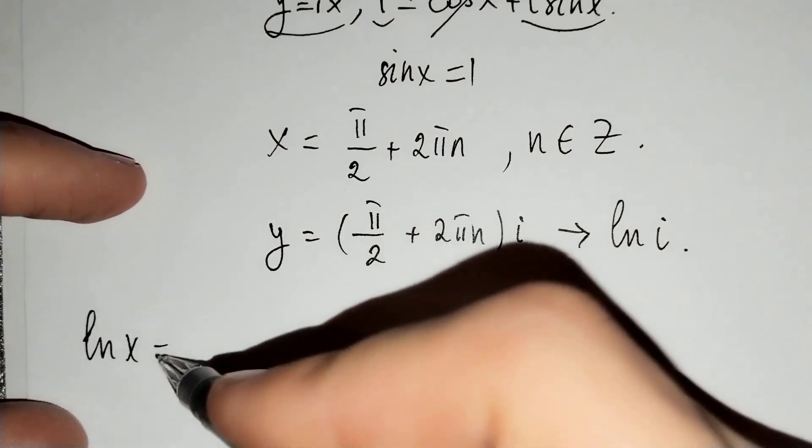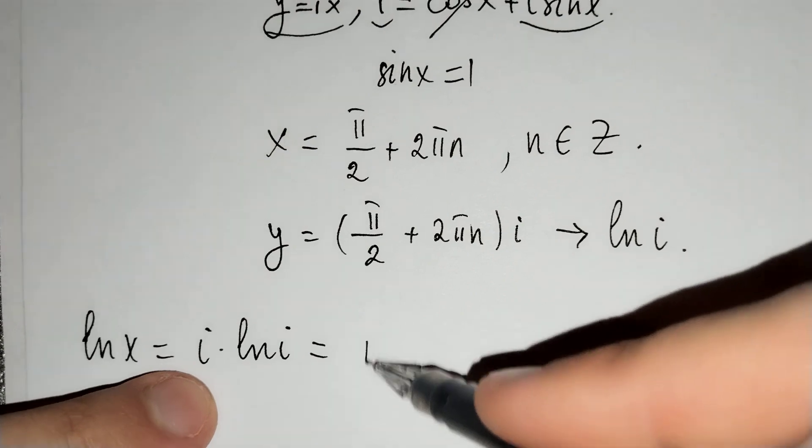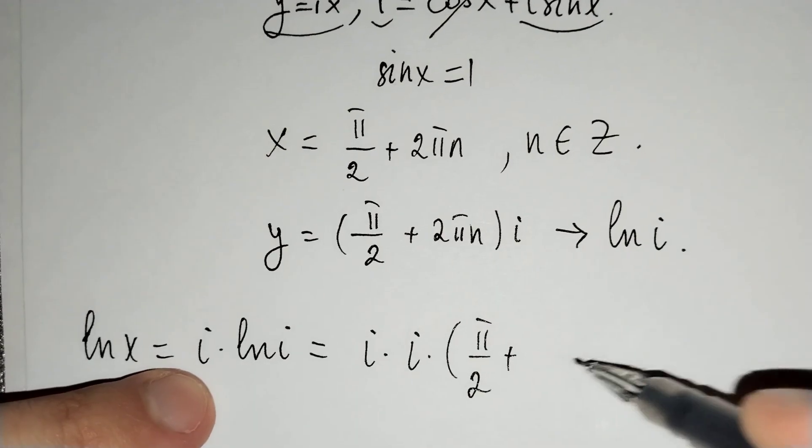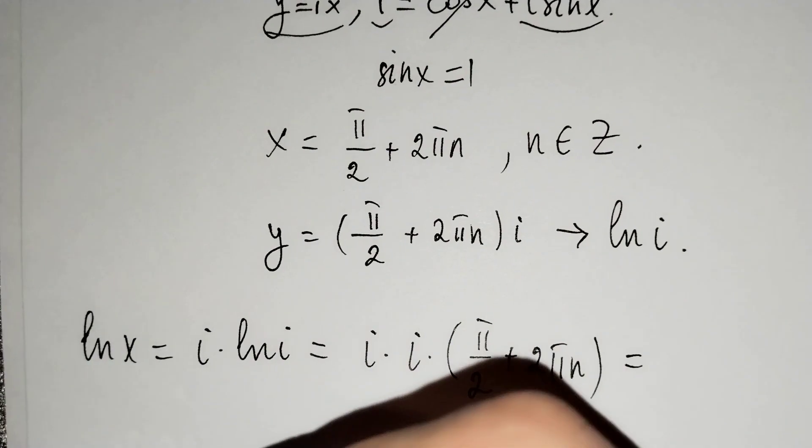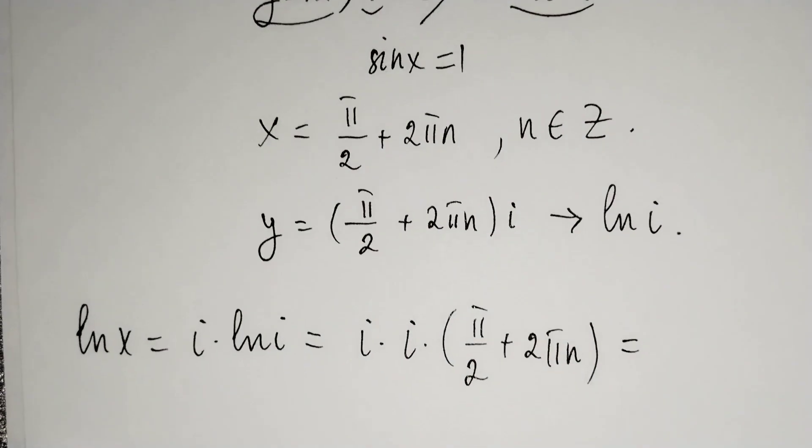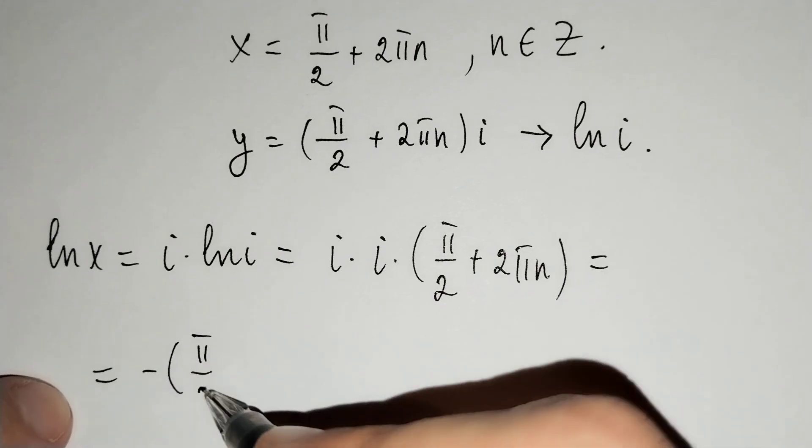ln x equals i times ln i, which is i times i times (pi over 2 plus 2 pi n). This equals i squared, which we know equals minus 1.